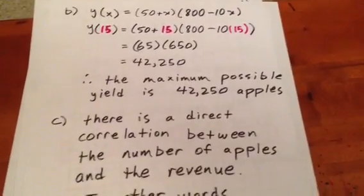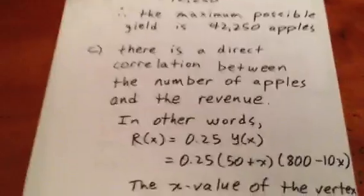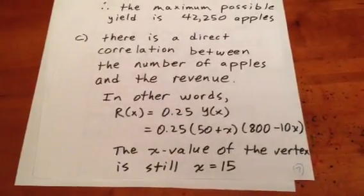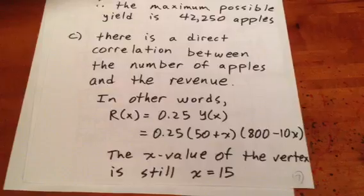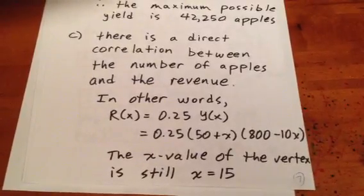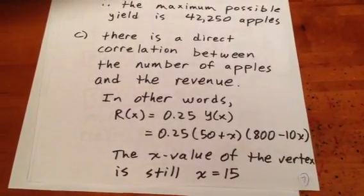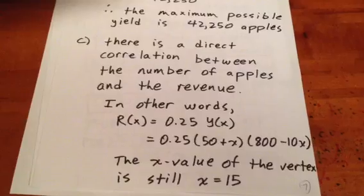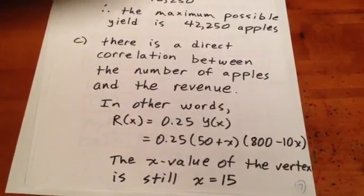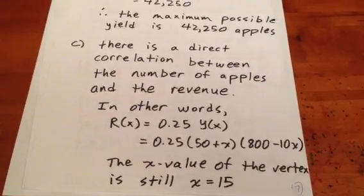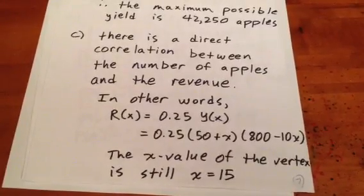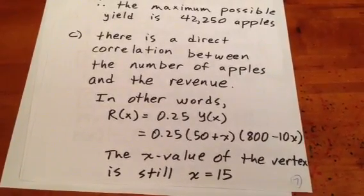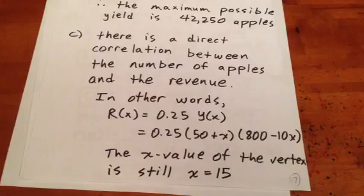Moving on then to our next one, we want to figure out the maximum possible revenue. Well, she knows she makes 25 cents per apple and she knows there's a direct correlation between the number of apples and the revenue. In other words, revenue is simply 0.25 times the yield. In other words, revenue is 0.25 times Y at X. Well, Y at X is equal to 50 plus X quantity times 800 minus 10X quantity.